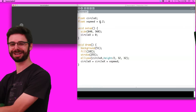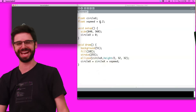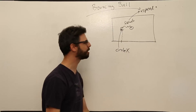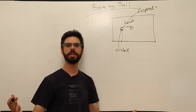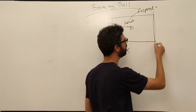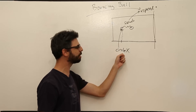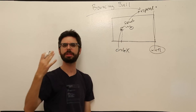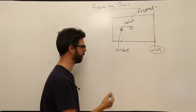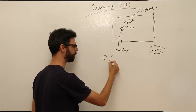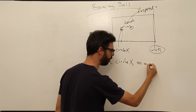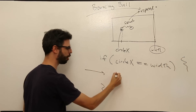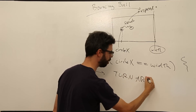We can talk while it moves and see if we get back before it reaches the edge. First, we have to decide: what's our condition for when the circle reaches the edge? You can say if the circle's x location equals the width of the window — if circle_x equals width — turn around.